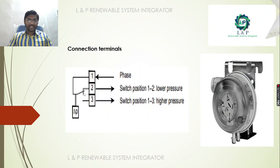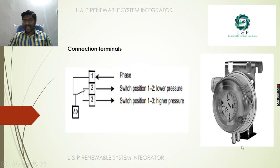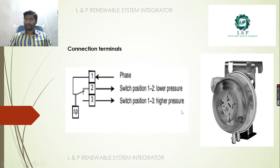The connecting terminals — terminals 1 and 2 — are normally the closed portion, which is always used for low pressure. In most cases, we monitor the high pressure points. When high pressure occurs and it is greater than the set point, the contact changes from 1-2 to 1-3, giving continuity.